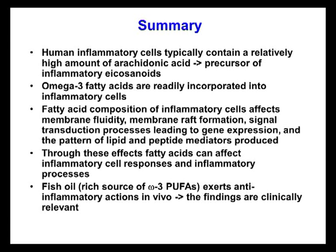My last slide summarizes these points. Human inflammatory cells usually contain a lot of the omega-6 fatty acid arachidonic acid, which is a precursor of inflammatory eicosanoids and a target for anti-inflammatory pharmaceuticals. Omega-3 fatty acids can get into the inflammatory cell membrane and actually replace arachidonic acid, and the change in fatty acid composition of inflammatory cells influences many aspects of membrane and cytosolic responsiveness to inflammatory signals, including fluidity, raft formation, signal transduction pathways that lead to gene expression, and the pattern of lipid and peptide mediators produced.